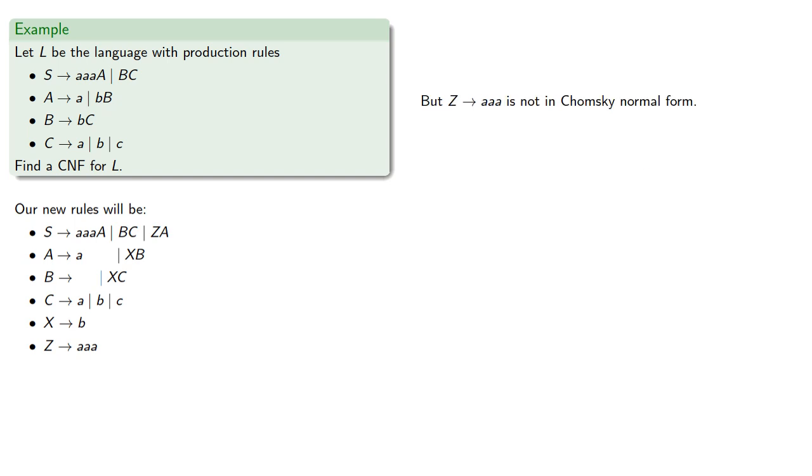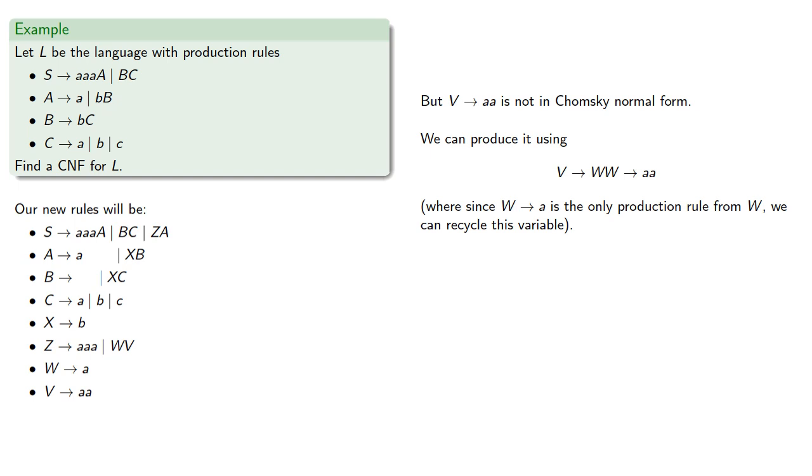But we can produce that using Z produces say WV, which produces AAA, which requires the new rules. And again, V produces AA is not in Chomsky normal form, but we can produce it by V produces WW, and we can use W here because W produces A is the only production rule from W, so we can recycle this variable.